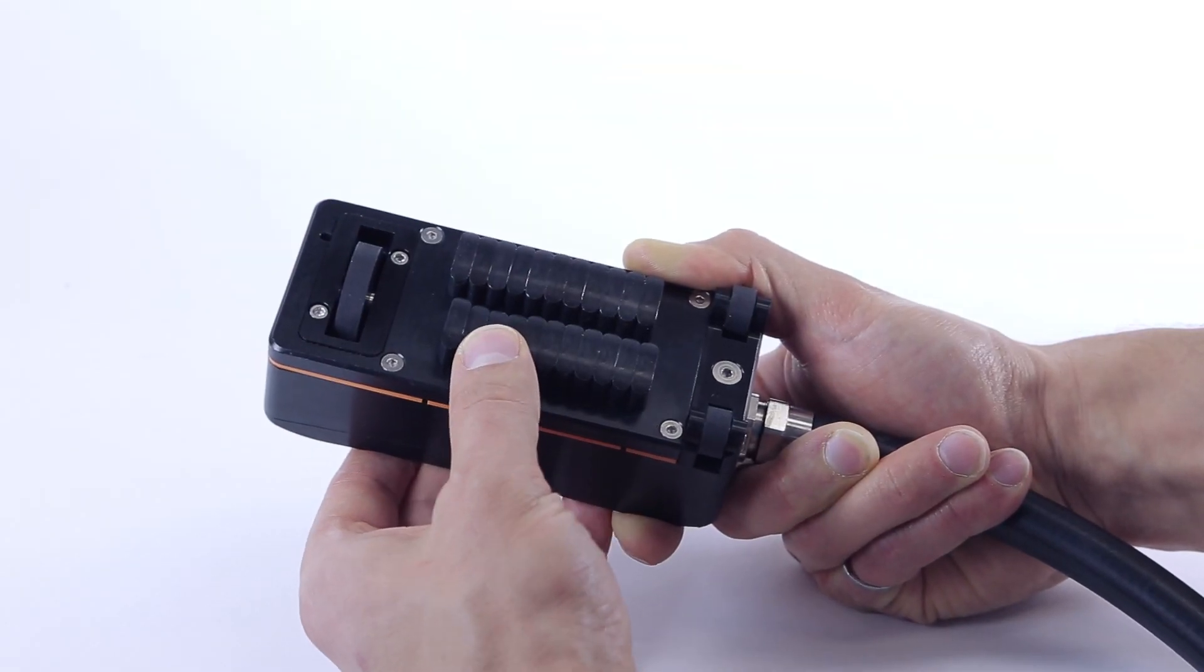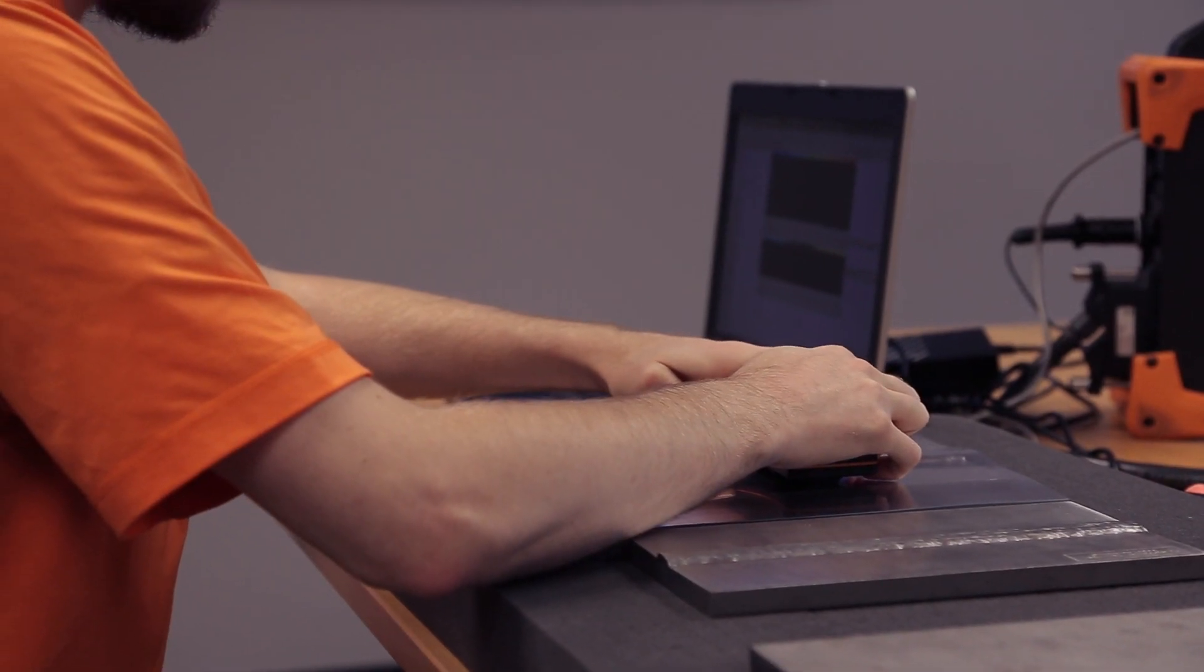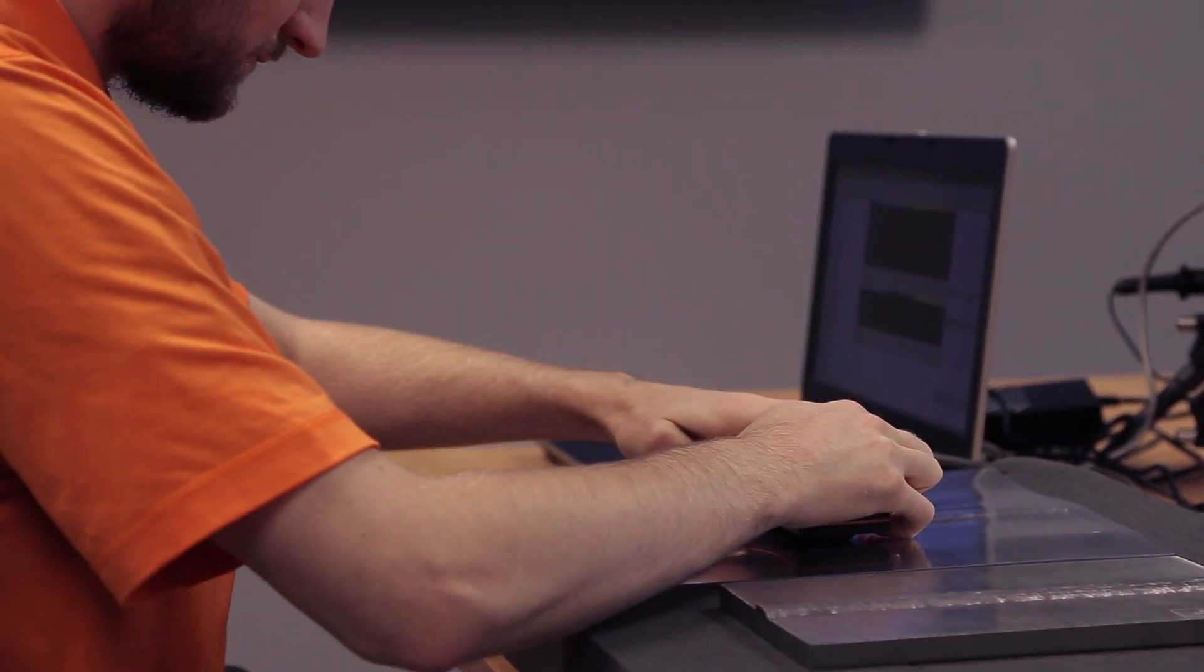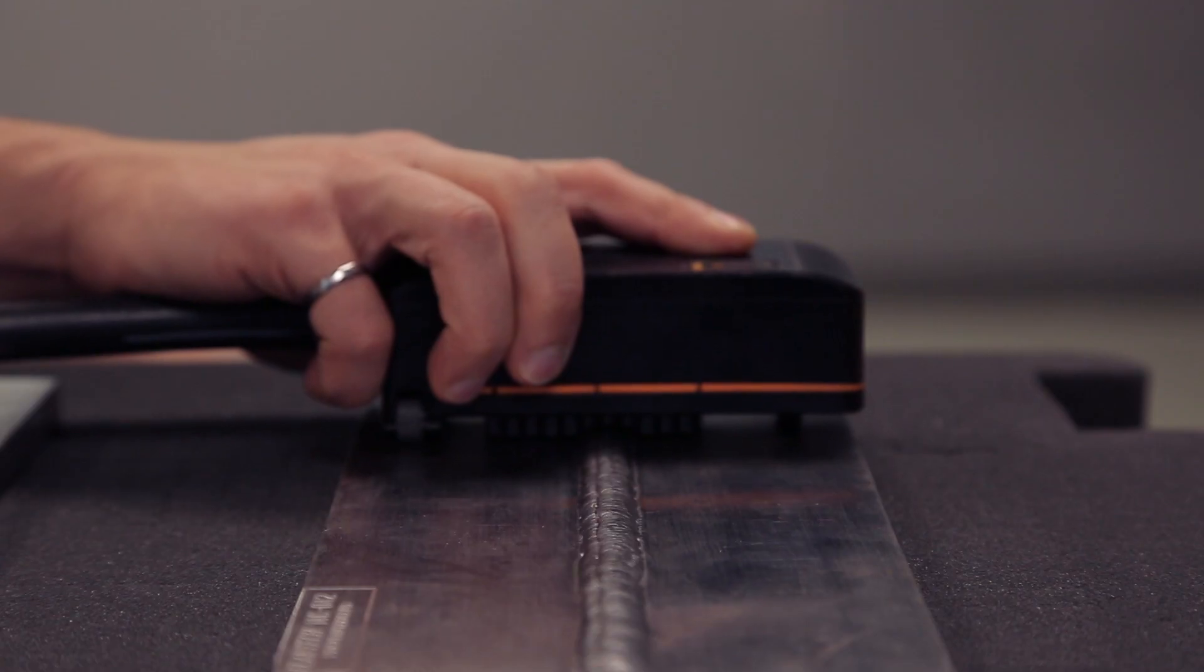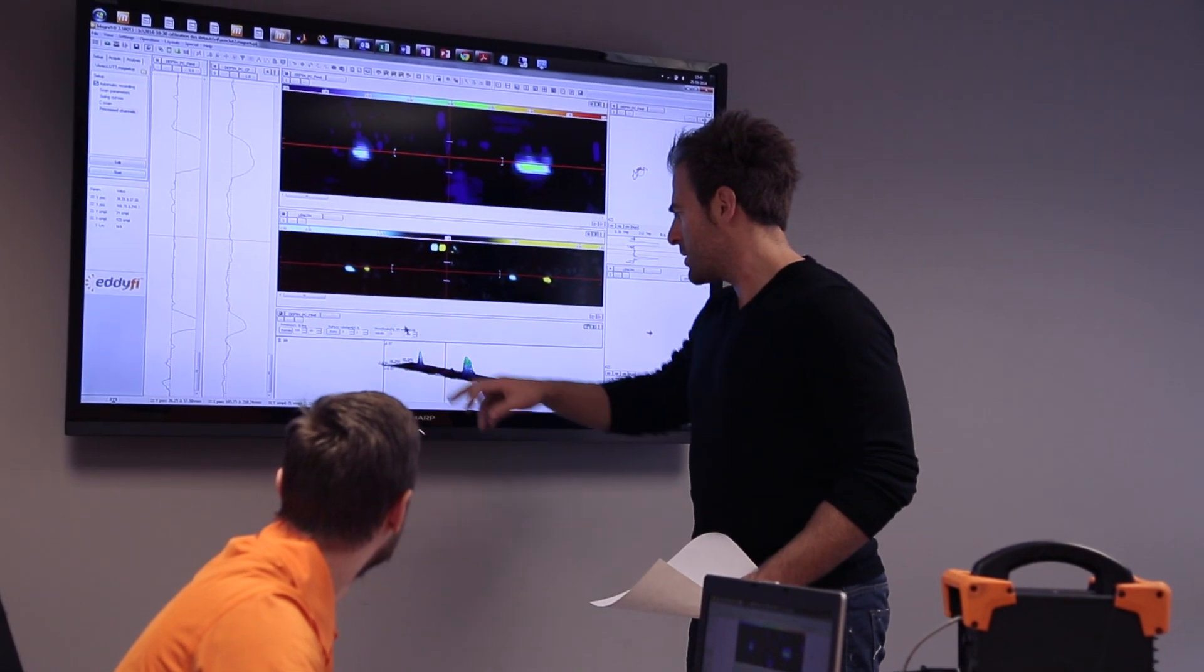The Shark was designed so that its spring-loaded fingers adapt to butt-weld crowns. These fingers enable the probe to scan the weld cap, the toe area, and the heat-affected zone in a single pass with uniform sensitivity.